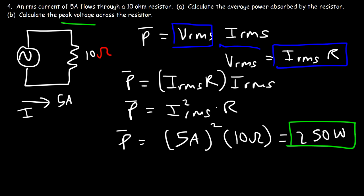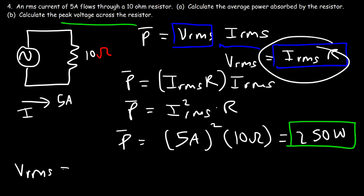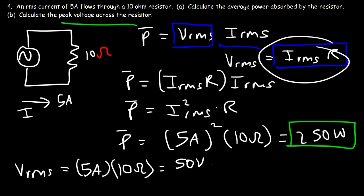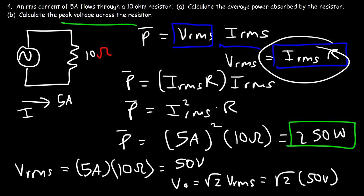Now calculate the peak voltage. The RMS voltage equals the RMS current (5 amps) times the resistance (10 ohms), giving an RMS voltage of 50 volts. The peak voltage equals the square root of 2 times the RMS voltage, so that's the square root of 2 times 50, which equals 70.7 volts. That's the peak voltage — and that's it for this video on calculations involving alternating current.